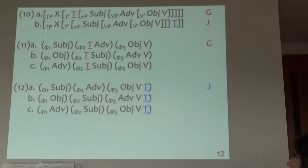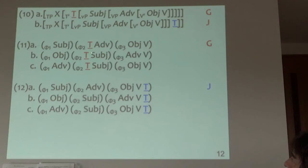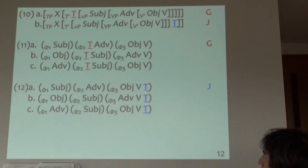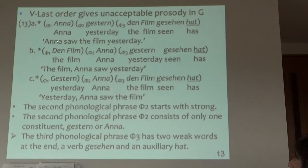So again, comparing German and Japanese: T is here in German, T is here in Japanese. These are the phonological patterns. Phi1 is no problem. In phi2, German allows weak-strong, but if it's Japanese, T cannot occur there — it's weak. So Japanese has to start a phonological phrase strong, and T is linearized at the end. That's the difference between German and Japanese.